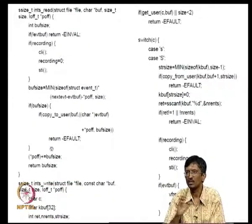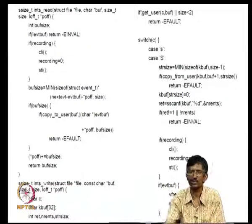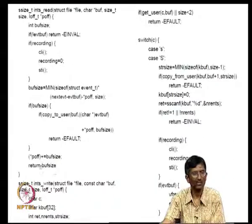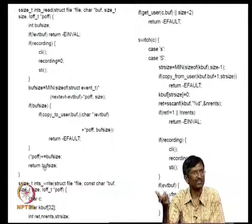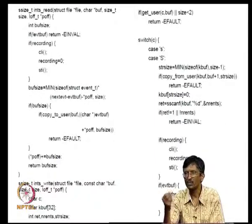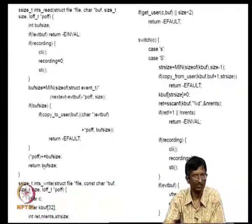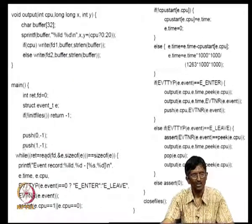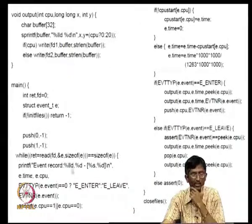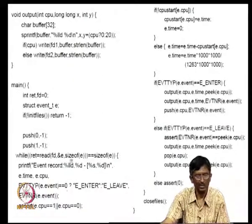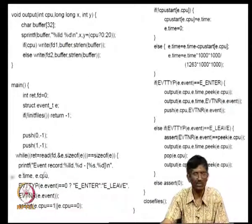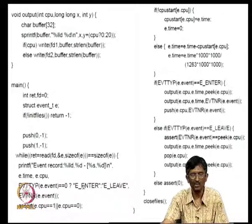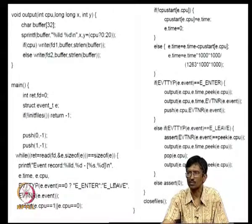The implicit file offset pointer is updated after each read. The return value of the read is the number of bytes actually read. The user-space code reads one event at a time, then populates eTime and eCPU from event.Time and event.CPU, and checks whether it is an interrupt entry or exit event.